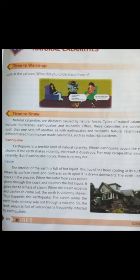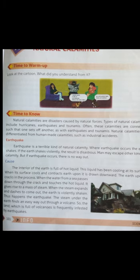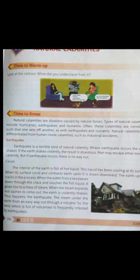Types of natural calamities include hurricanes, earthquakes, and tsunamis. Often these calamities are connected such that one sets off another, as with earthquakes and tsunamis. Natural calamities are differentiated from human-made calamities such as industrial accidents.